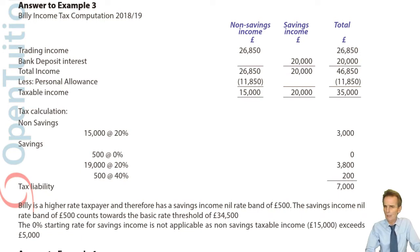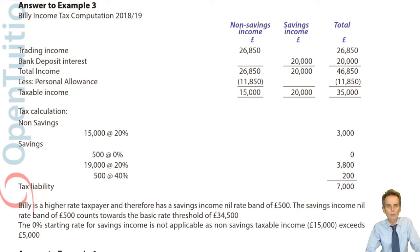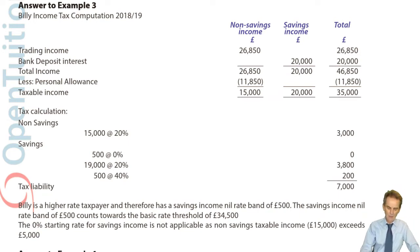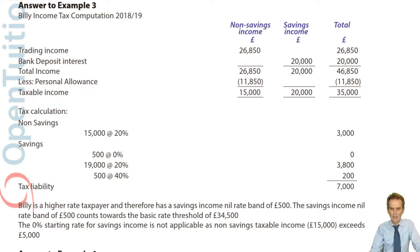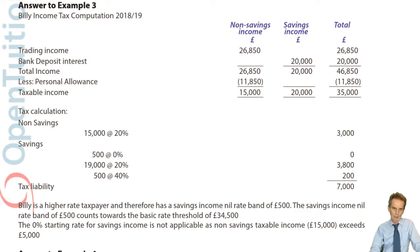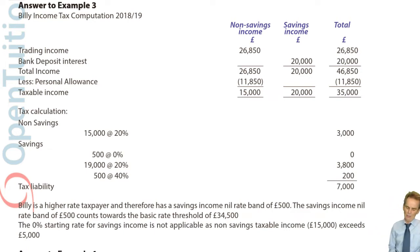All the examples we did in class were dealing with basic rate taxpayers. I've left you examples two through to five to have a go at. I want to look at the answer to example three, which was the first time you encounter savings and non-savings income where the taxpayer is a higher rate taxpayer.